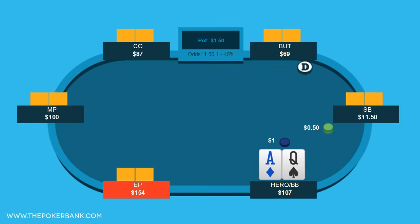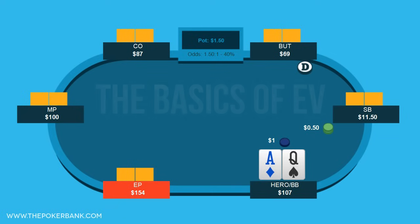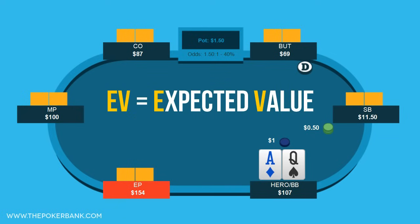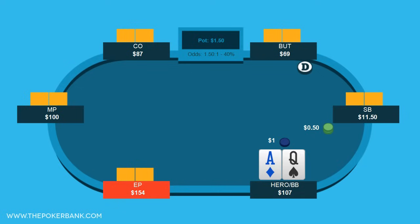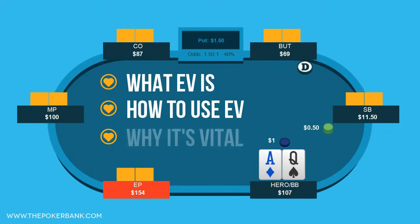Hello, and welcome to today's Quick Plays video on the basics of Poker EV. EV, short for expected value, is the most important mathematical concept in poker. Without a solid grasp of EV and the ability to create plus EV plays, a player is doomed to fail. In this video I'll show you what EV is, how to use it, and why understanding it is vital for poker success.